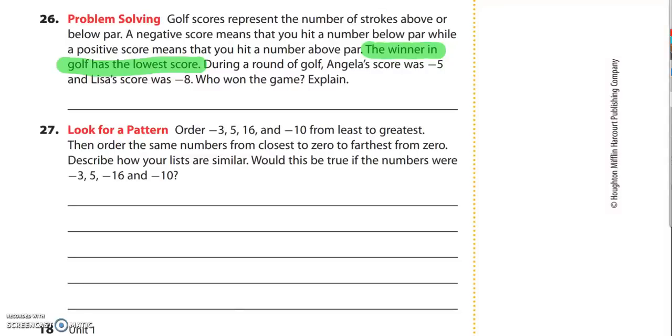Well, so what we're looking for here is the lowest score. And if you think about a number line, I'll go and draw a number line here for number 26. Think about a number line. I'm going to put 0 right here, negative 1, negative 2, negative 3, negative 4, negative 5, negative 6, negative 7, negative 8.